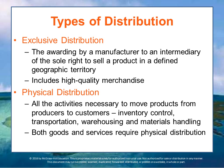Exclusive distribution exists when a manufacturer gives an intermediary the sole right to sell a product in a defined geographic territory. This exclusivity provides an incentive for a dealer to handle a product that has a limited market — they're more willing to accept that not everyone will buy it. Exclusive distribution is the opposite of intensive distribution: products are purchased over a longer period of time, and service or information is required to develop a satisfactory sales relationship.